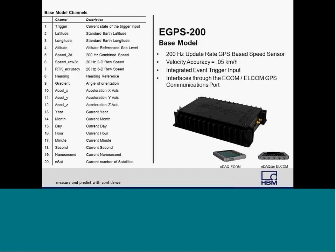The GPS port uses SOMAT GPS devices that come in 5 and 200 hertz models. The GPS used in conjunction with the eDAC can give users a number of GPS channels, like altitude, latitude, and longitude, during an acquisition. The types of channels you can get from your GPS will be dependent on the GPS model you have, such as the SOMAT 5 hertz and 200 hertz GPS.